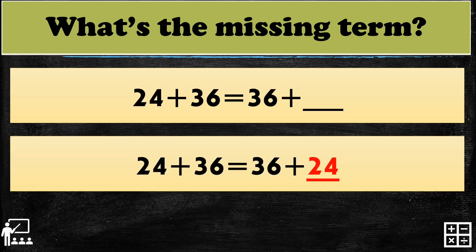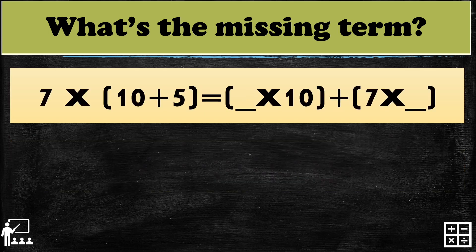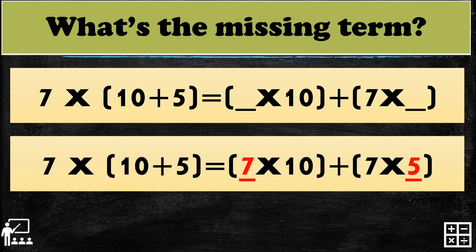Last two. 7 times 10 plus 5 equals blank times 10 plus 7 times blank. Can you guess the missing terms in this equation? That's right — it's 7 and 5.